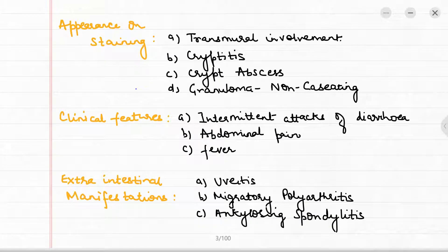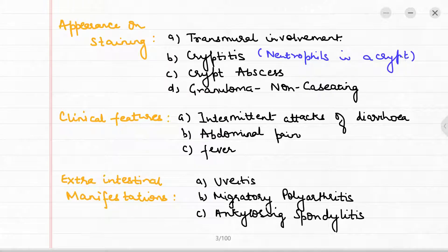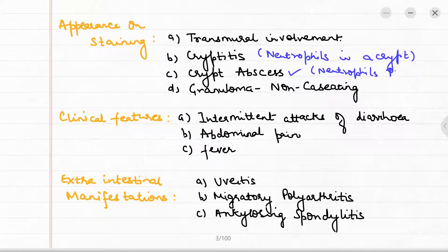On staining, we see transmural involvement. We also see something known as cryptitis, which is basically the presence of neutrophils in a crypt. When these neutrophils increase in number, they form what is known as a crypt abscess. There is also a granuloma, which is a non-caseating one.